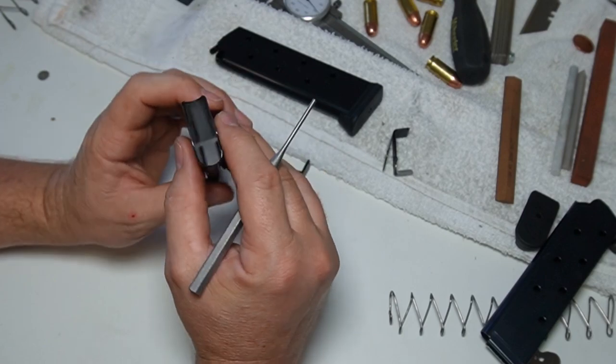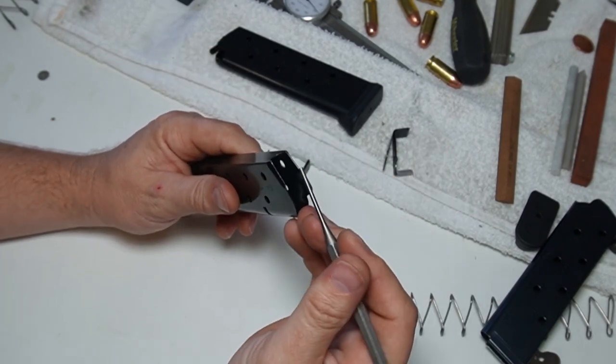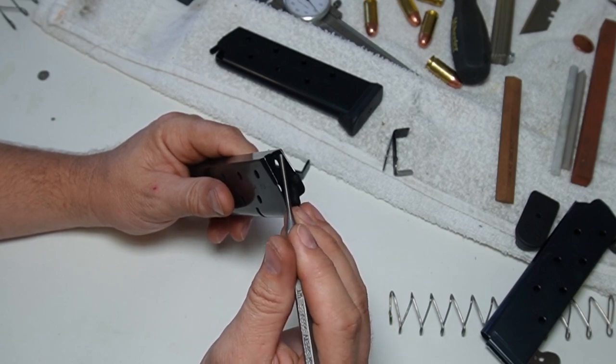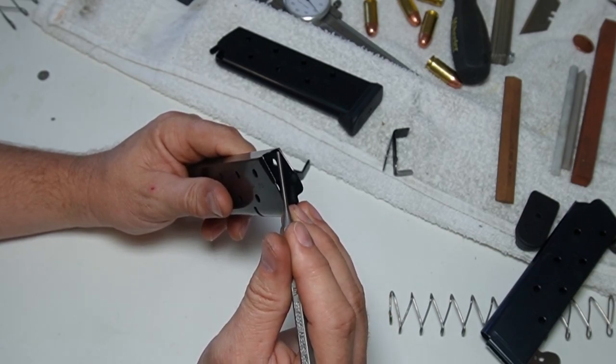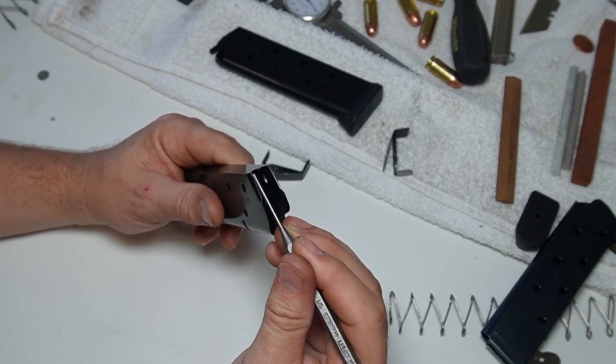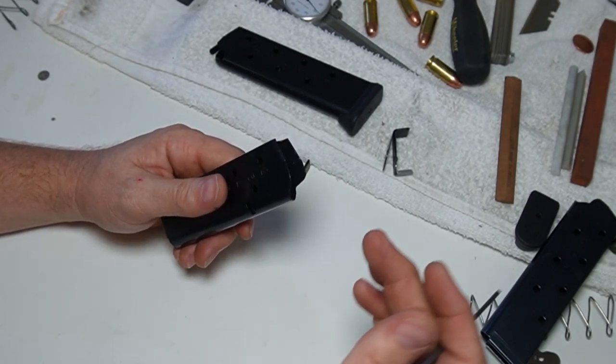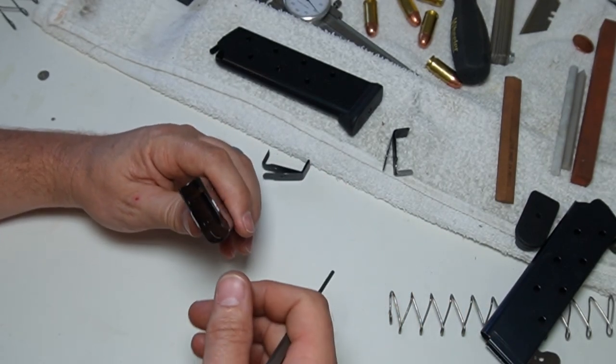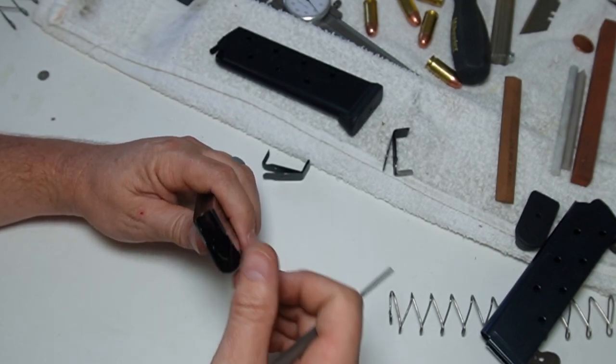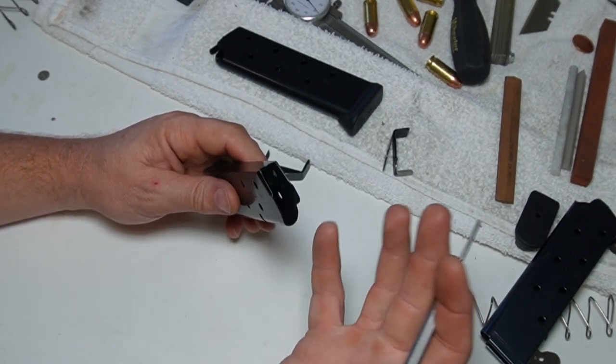Now on the tube itself, the feed lips for the most part felt really good. The only issue that I had was it felt like this last sixteenth, almost an eighth of an inch right here on both sides, had a sharp corner. And you really notice it when you get round eight in there and you're pushing down and sliding it back. You're feeling it dig into the metal or into the brass.